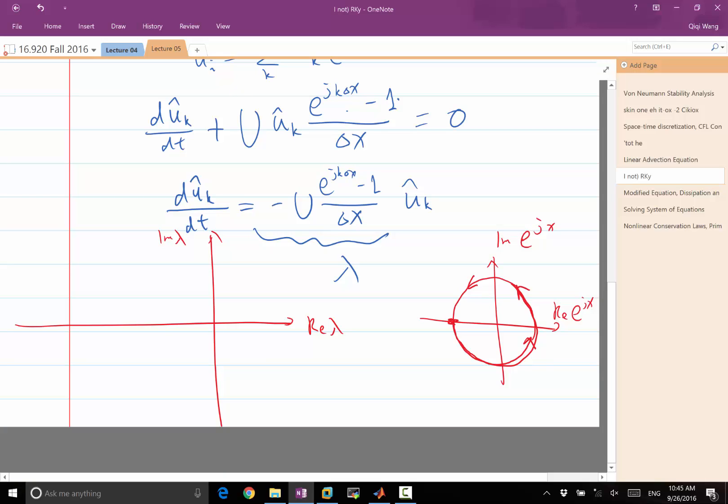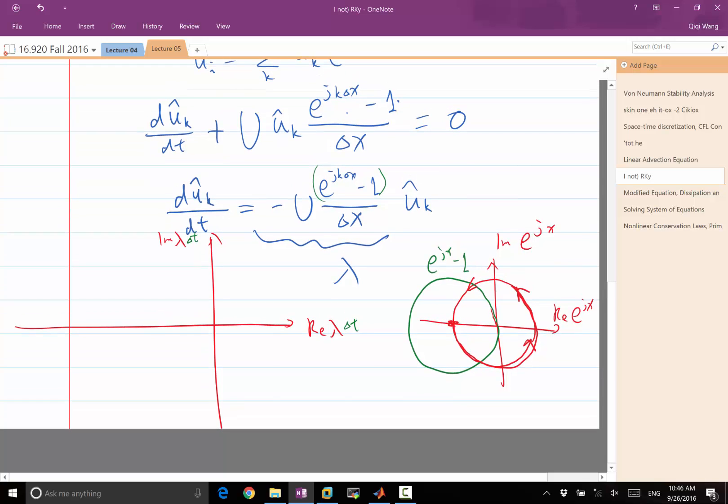As x goes from when x is minus pi, it's over here. And you go over here and goes all the way to here. That's a unit circle. Unit circle minus 1 is going to shift it to here. So minus 1 is going to shift it to here. So the green line is e to the j x minus 1. So this is the green one. And that is multiplied. So actually, let me put it as lambda delta t.